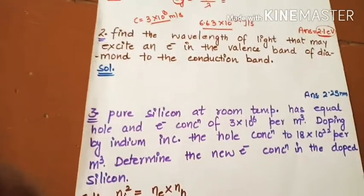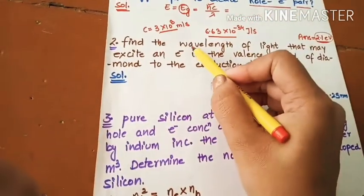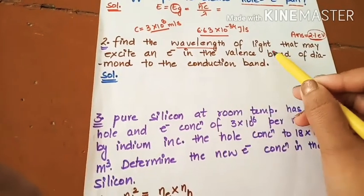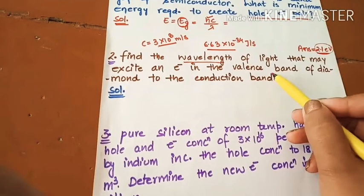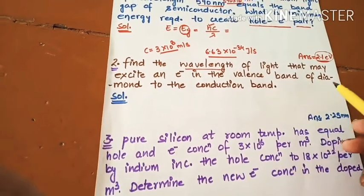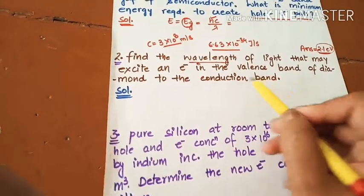Next one is: Find the wavelength of the light that may excite an electron in the valence band of diamond to conduction band.